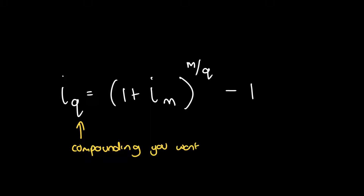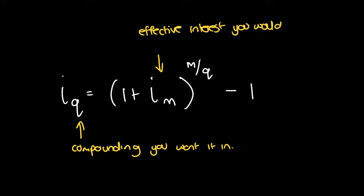iM is the one that already came in — the compounding periods it was already written as. You need the effective interest rate for it, so if it was given to you as a nominal rate, you would still have to convert it to effective first. So iM is the effective interest rate you have, and M is its compounding periods.